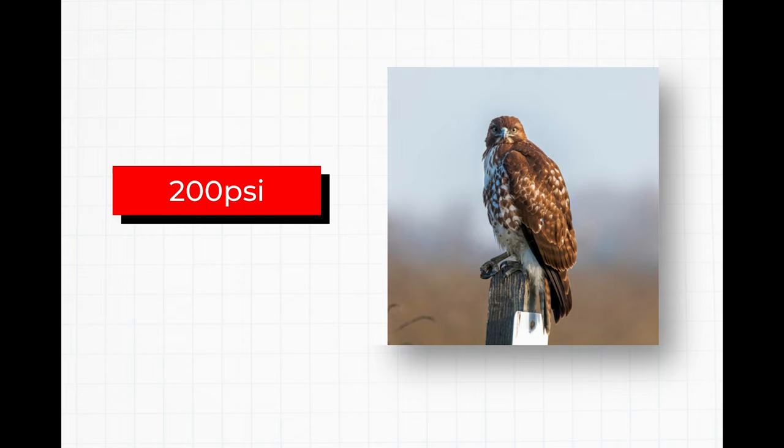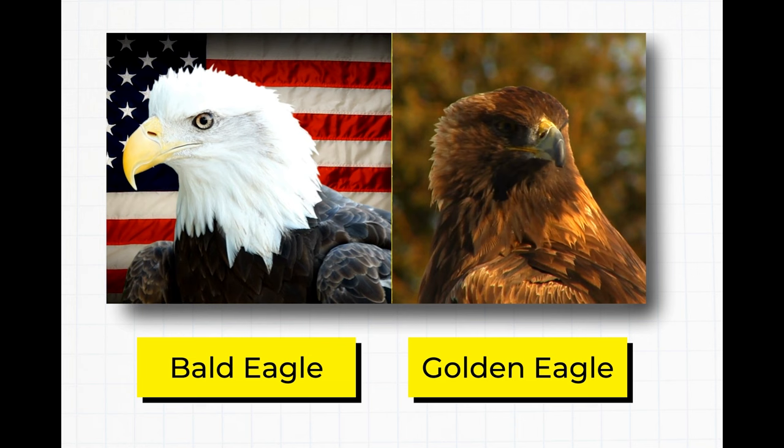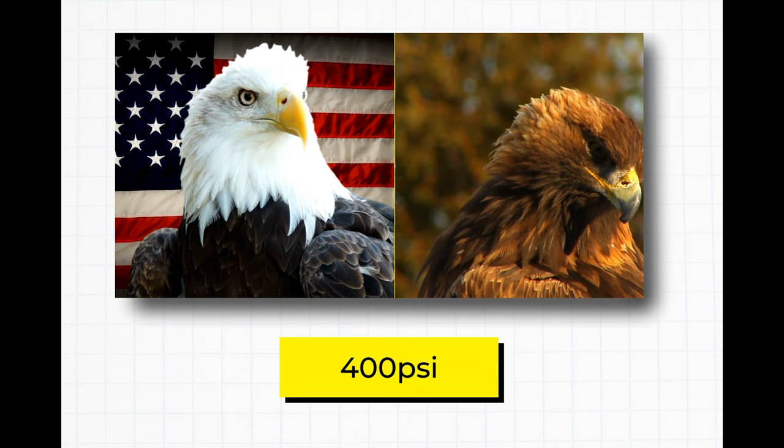One way to measure strength is through grip strength. While the talons of a red-tailed hawk exhibit a grip strength of 200 PSI, this pales in comparison to the grips of bald and golden eagles. According to estimates, the grips of these giant eagles can reach up to 400 PSI.